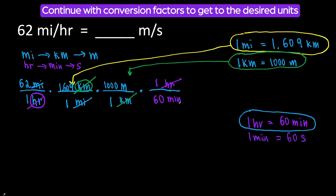But we now have meters per minute — we need seconds. So we will prepare to multiply by another conversion factor, our last one: one minute is equal to 60 seconds. We will put minutes in the numerator so they cancel out, and we will put seconds in the denominator. So one minute goes here and 60 seconds goes in the denominator.